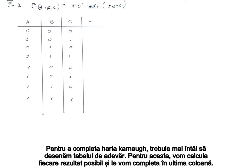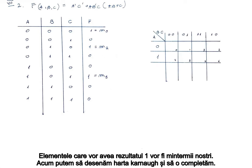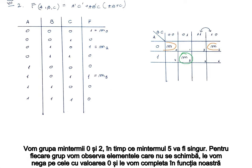To complete the K-map we first need to draw the truth table. For this we will compute each possible outcome and complete them in the last column. The elements that will have the result 1 will be our minterms. We can now draw the K-map and complete it. Pay attention when making the K-map because the Hamming distance between two consecutive elements has to be 1. We can now mark out minterms 0, 2, and 5. We will group minterms 0 and 2 while minterm 5 will be alone. For each group we will observe the elements that don't change, negate those with the values of 0, and complete them in our function.